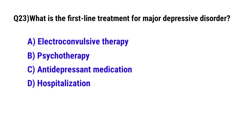Question number 23. What is the first line of treatment for major depressive disorder? The correct option is C: antidepressant medication.